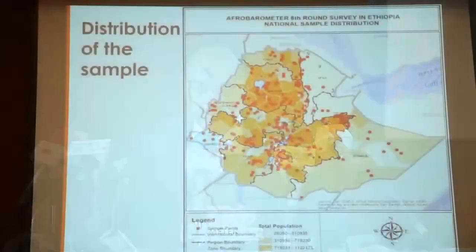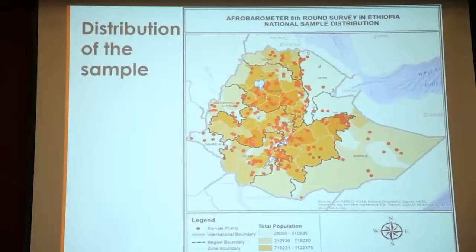The distribution of the sample, as you can see from the map, falls in every part of the regions, and has been determined based on probability proportional to size. For instance, 33.5% of the sample goes to Oromia because their share of the national population is the same ratio. About 28.5% goes to Amhara region, about 21% to SNNP, 6.1% to the Somali region, 5.5% to Tigray, 3.7% to Addis Ababa, and so forth depending on population size. Afrobarometer is present in every nook and cranny of the country.